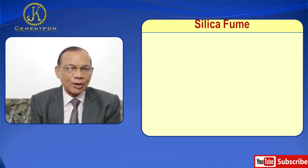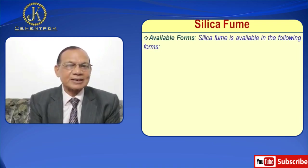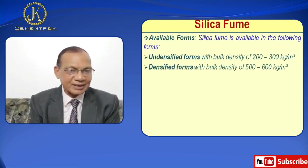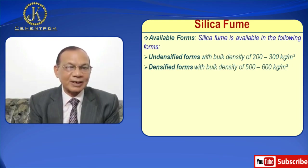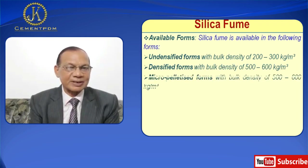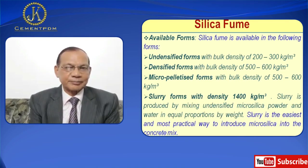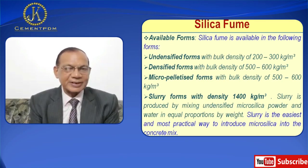Silica fume is available in the following forms. Number one: undensified form with bulk density 200 to 300 kg per meter cube. Then densified form with bulk density of 500 to 600 kg per meter cube. Then micro-pelletized form with bulk density of 500 to 600 kg per meter cube. Slurry is produced by mixing undensified micro silica powder and water in equal proportion by weight. Slurry is the easiest and most practical way to introduce micro silica into the concrete mix.